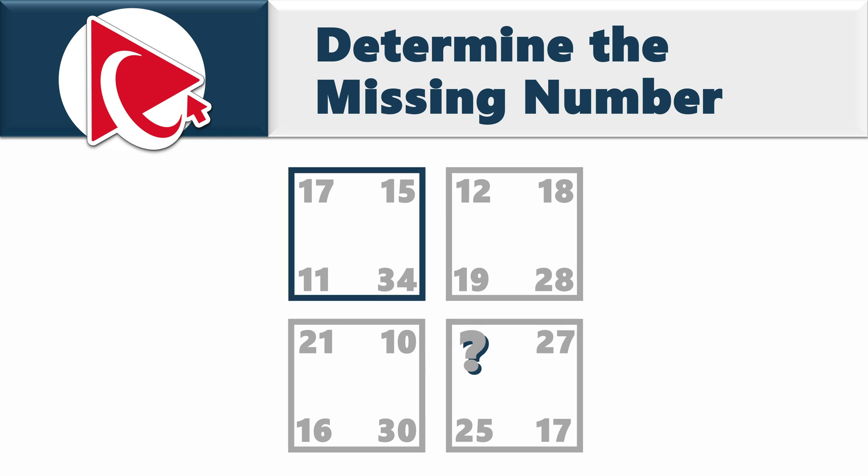The first square has numbers 17, 15, 34 and 11. The second square has numbers 12, 18, 28 and 19. The third square has numbers 21, 10, 30 and 16.